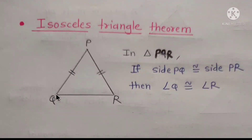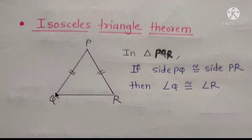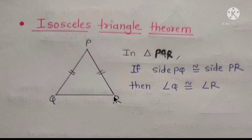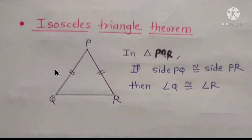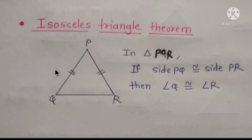The converse of the isosceles triangle theorem: if angle Q is congruent to angle R, then side PR is congruent to side PQ. So if sides are congruent, the opposite angles are congruent, and if angles are congruent, the opposite sides are congruent.